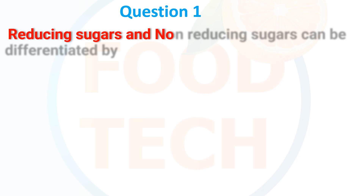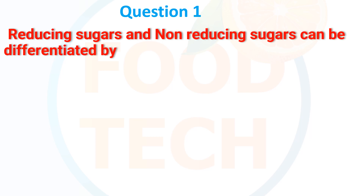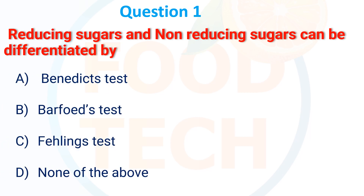Reducing sugar and non-reducing sugar can be differentiated by: A. Benedict test, B. Barfoed test, C. Fennelly test, D. None of the above. The correct answer is C. Fennelly test.